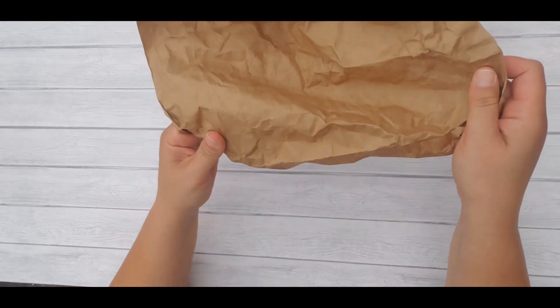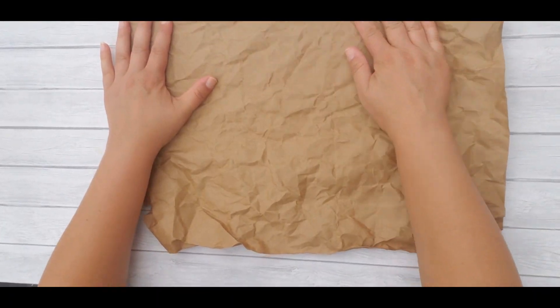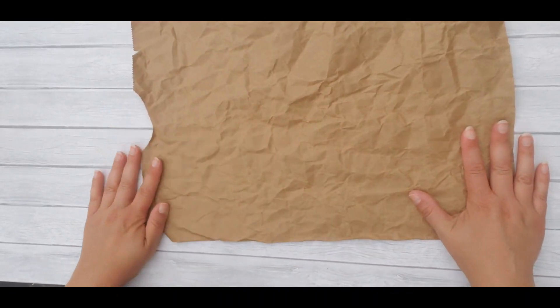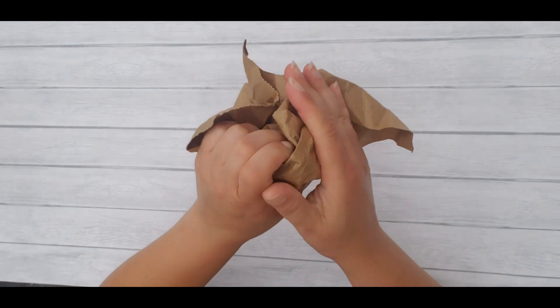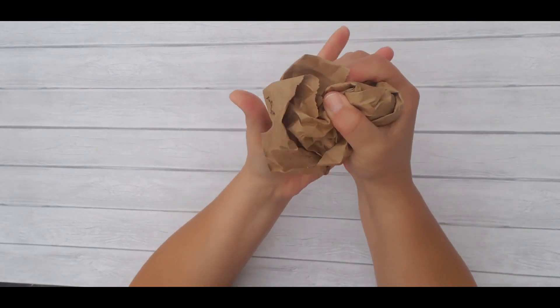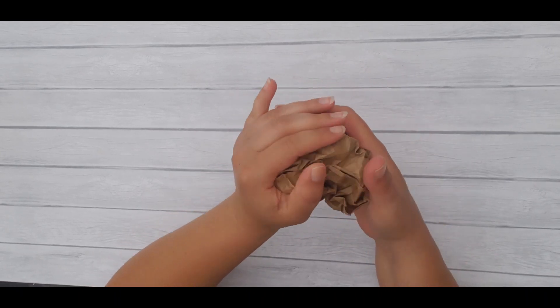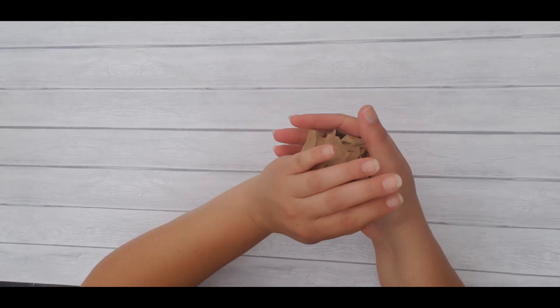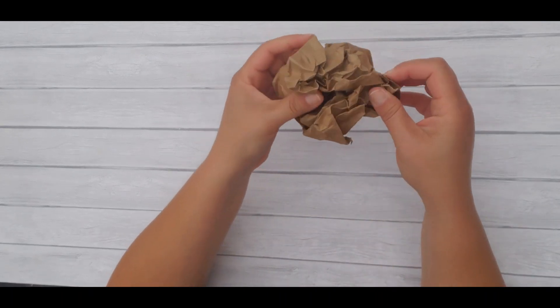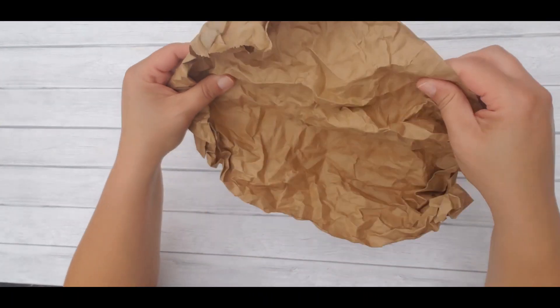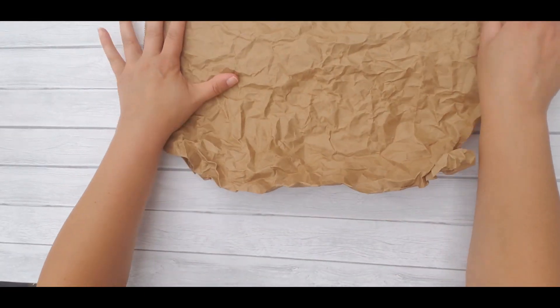So there we go. Opening it up again. We've seen lots of wrinkles. And I'm going to crumple it up again. And the reason I'm opening it up and crumpling it again is that so I get wrinkles in different places. So every time I roll it up like that, I get a different wrinkle pattern. And the more patterns you put on it, the better the end result will look.